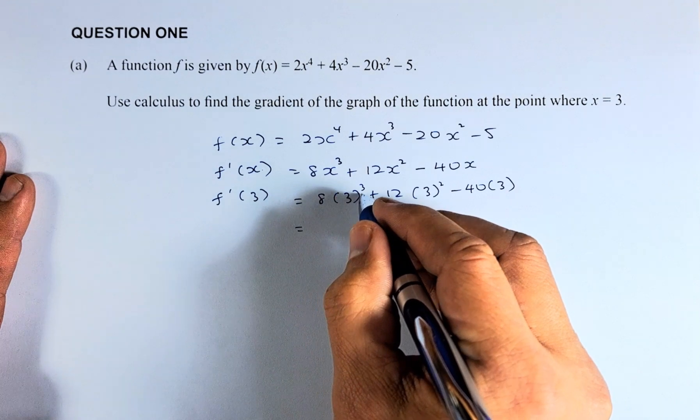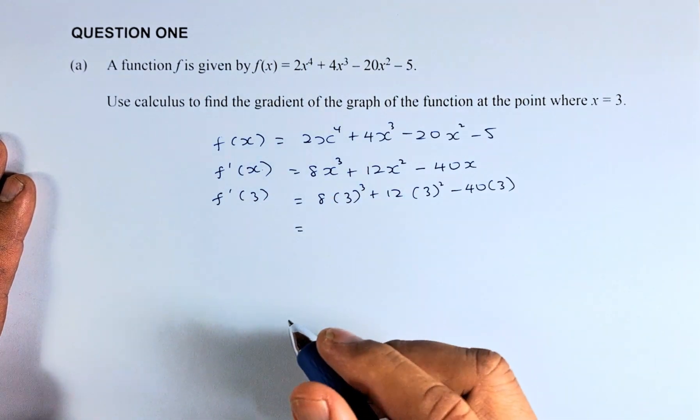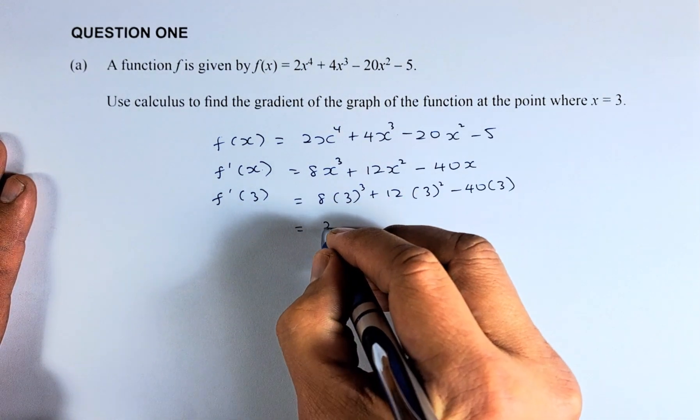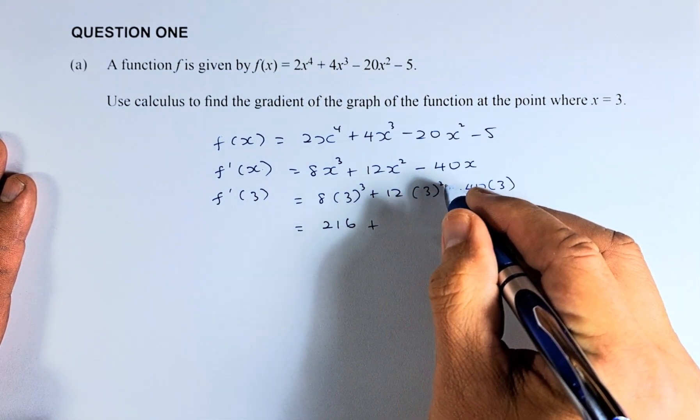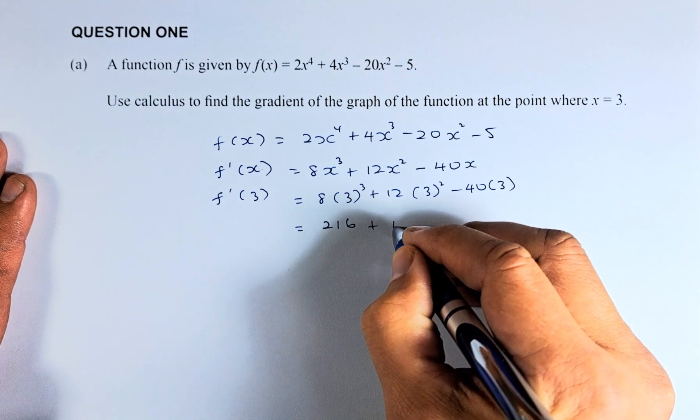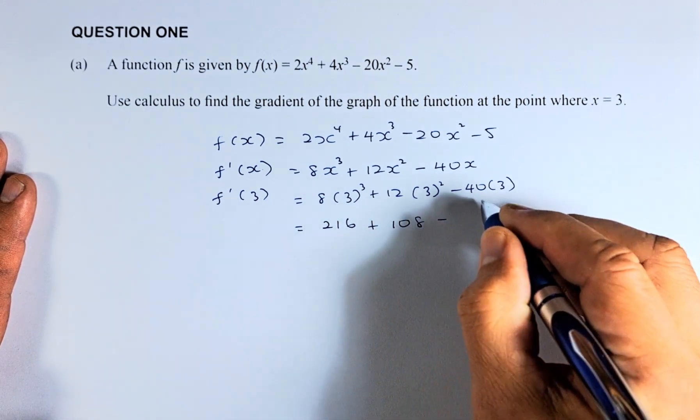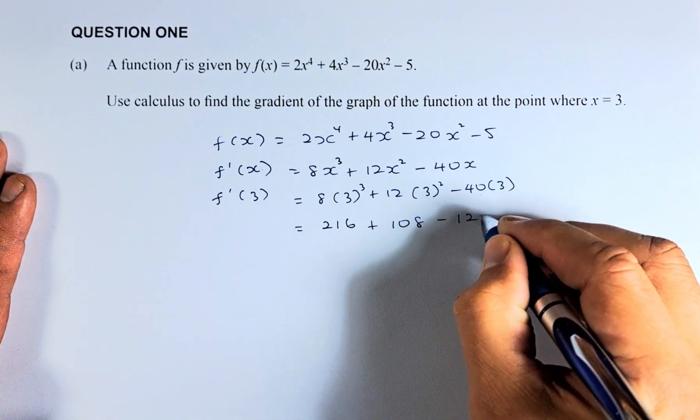So 8 times 27, 3 cubed is 27. 8 times 27, the answer is going to be 216. 12 times 9, because 3 squared is 9. 12 times 9 is going to be 108. And last but not least, 40 times 3 is going to be 120.